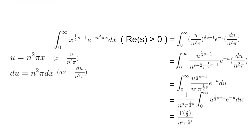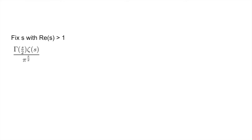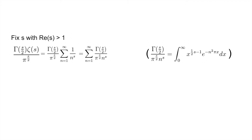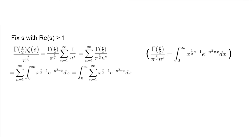Now fix some s with real part greater than 1 and consider gamma of s over 2 times zeta of s divided by pi to the power of s over 2. By the definition of the Riemann zeta function, we rewrite this as gamma of s over 2 divided by pi to the power of s over 2 times the sum from n equals 1 to infinity of 1 over n to the s. Moving the sum outside and using our formula from earlier, this becomes the sum from n equals 1 to infinity of the integral of x to the power of 1 half s minus 1 times e to the power of negative n squared pi x dx. Because we have absolute convergence we can switch the sum and integral. Defining psi of x as the sum from n equals 1 to infinity of e to the power of negative n squared pi x, we can simplify our formula.